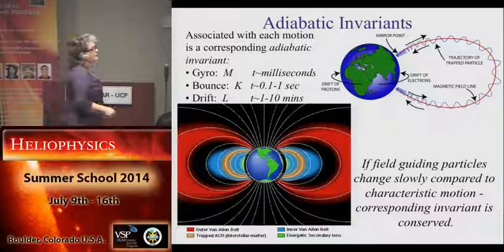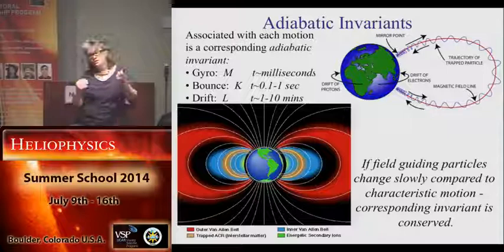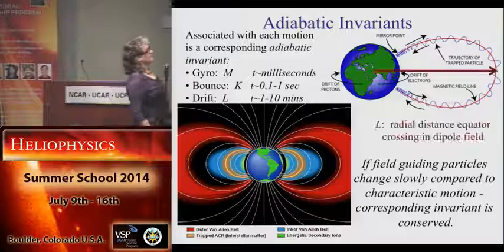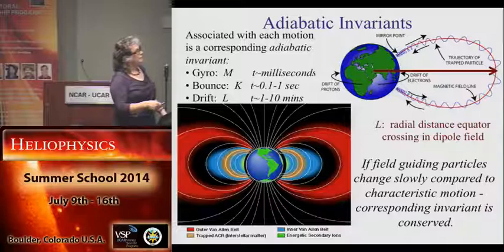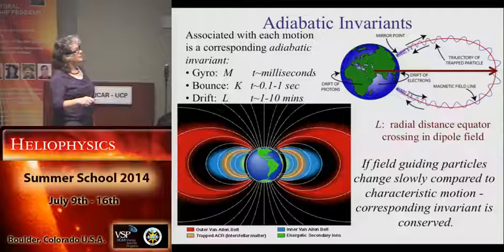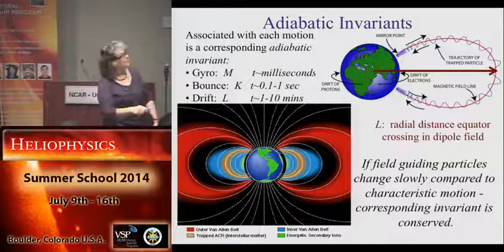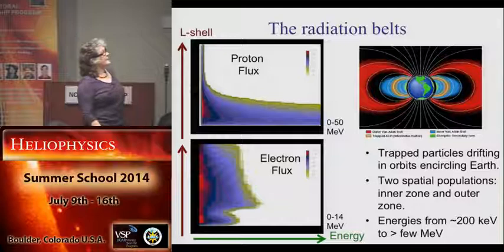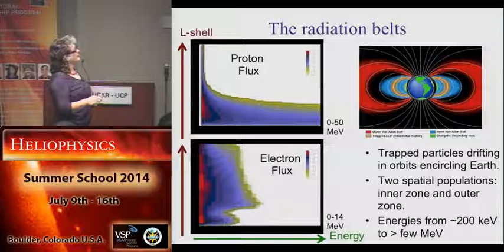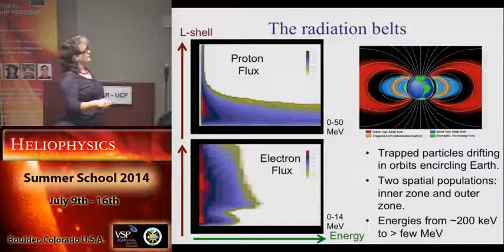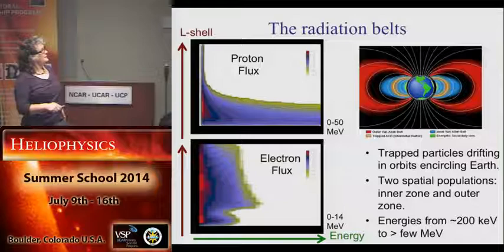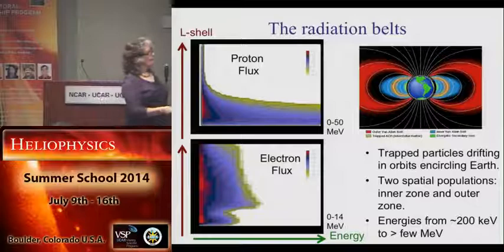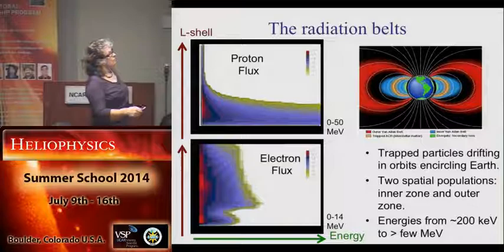That's why it's called an invariant. But of course, if you have variations in the fields on these timescales, you will violate those invariants. For a dipole, we define an L-shell as the description of this magnetic flux tube — the furthest crossing point from the center of the planet for a dipole field. Here is a plot showing flux as a function of L-shell and energy — 1 to 14 MeV electrons, for example. We have this distribution with a canonical picture of an inner radiation belt and an outer radiation belt.